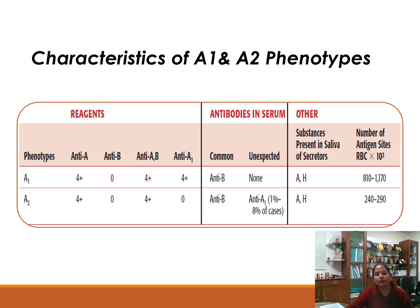There are quantitative and qualitative differences between A1 and A2 subgroups. Quantitatively: differences in number of antigen sites, amount of transferase enzymes, and degree of branching. Qualitatively: differences in precursor oligosaccharide chains, soluble differences in transferase enzyme, and formation of anti-A1 in a percentage of some subgroups. Both A1 and A2 give strong four-plus reactions with anti-A and anti-AB antisera in forward grouping.